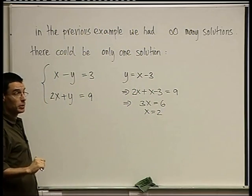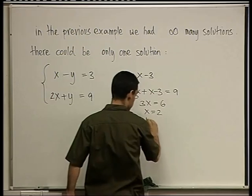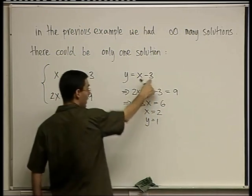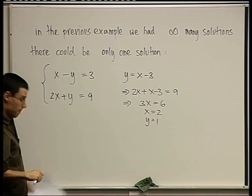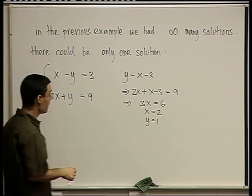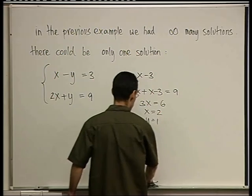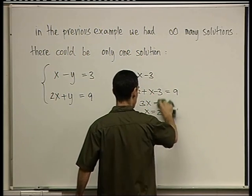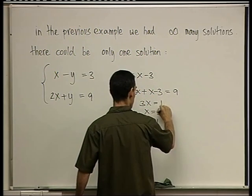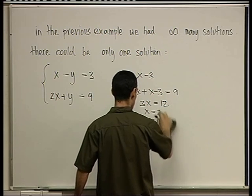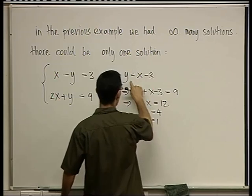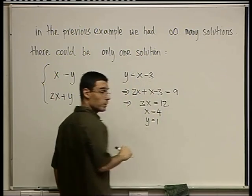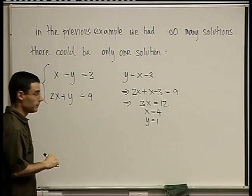x equals 2... no, wait. And that's it. x has to be equal... you're right, 3 plus, you're right. 3x equals 12, x equals 4, and y equals 4 minus... y is still 1. Do you agree? Okay.